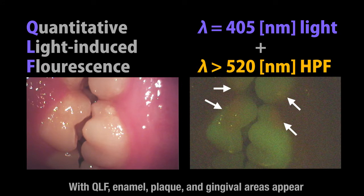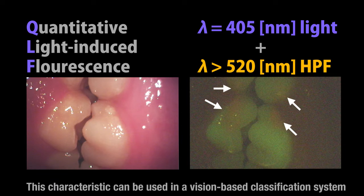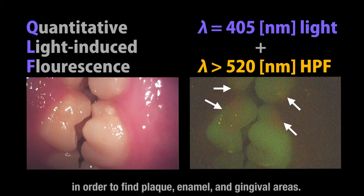With QLF, enamel, plaque, and gingival areas appear green, red, and brown, respectively. This characteristic can be used in a vision-based classification system in order to find plaque, enamel, and gingival areas.